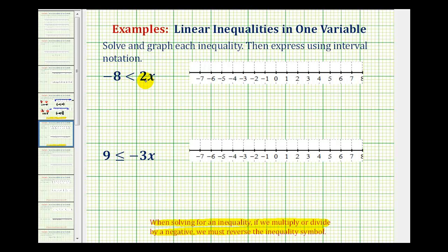Also notice in both of these examples the variable is on the right side. So we'll go ahead and solve for x like we normally would, and then discuss how to deal with the variable on the right side. To isolate the variable, two x means two times x, which means we'll have to divide both sides of the inequality by positive two. Now we're dividing by a positive two, so we do not reverse the inequality.